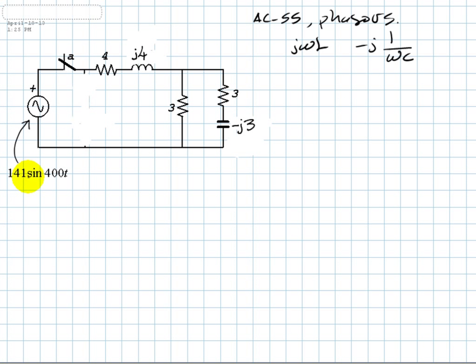Of course, we also have to represent the source with a phasor. Peak value 141. The RMS value is going to be that divided by root 2, that is 100 volts. The phase is 0 degrees. We are ready. We use phasors to solve this.